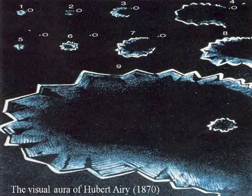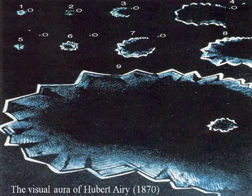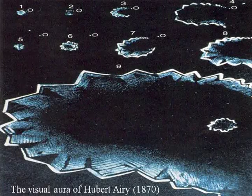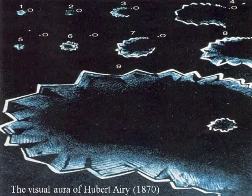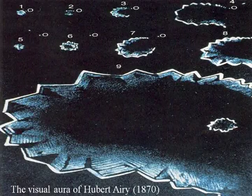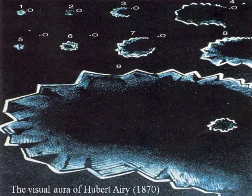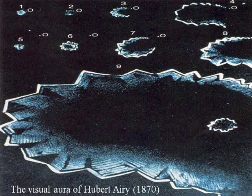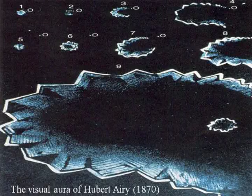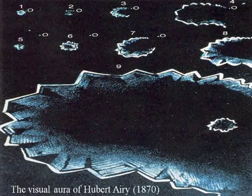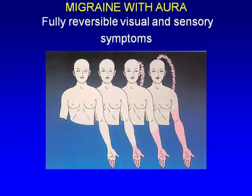This is a classical description of aura by a physician in 1870 — it started as a small blurry spot and slowly formed into a pattern we call fortification spectrum, because it looks like a fort. Sometimes the area can be blurry or dark. It's quite disabling — you can imagine a patient driving with this — and some people complain about the aura more than the pain, saying the pain is nothing compared to this.